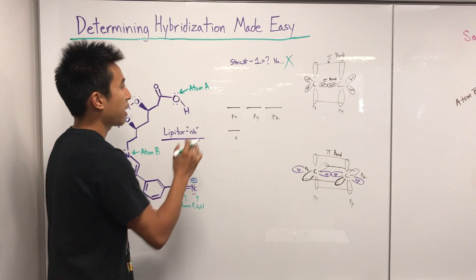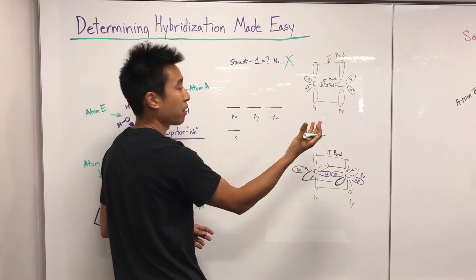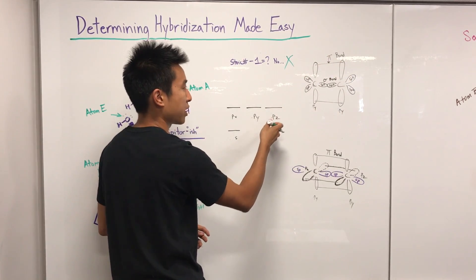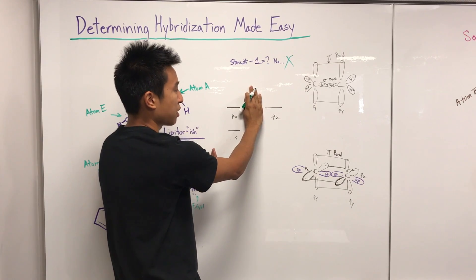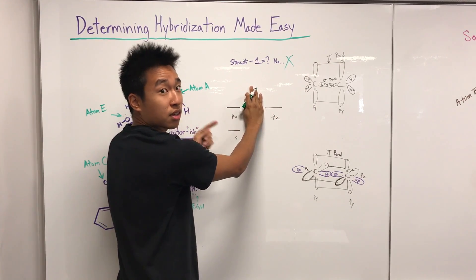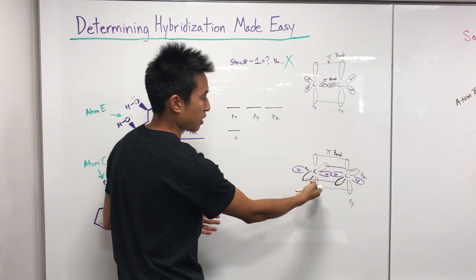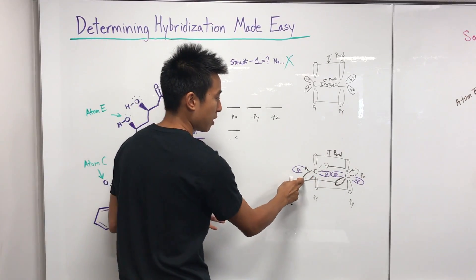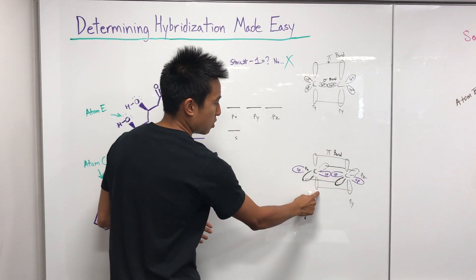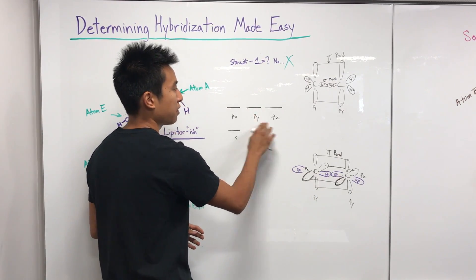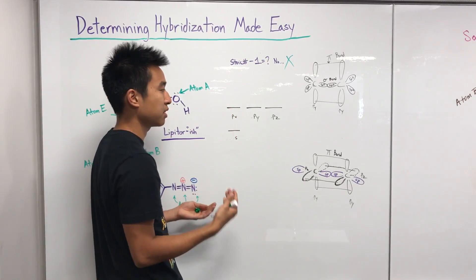If your atom can make one pi bond, it uses a py orbital to set that up, so py is out of play — you've sacrificed it. What's left is an s and two p's, so your atom has to be sp2. If your atom can make two pi bonds at maximum, you have to use two p orbitals — py and pz — so both are knocked out. What's left is just s and one p, so the hybridization has to be sp.